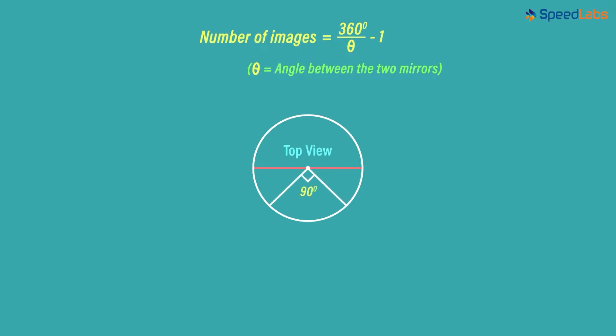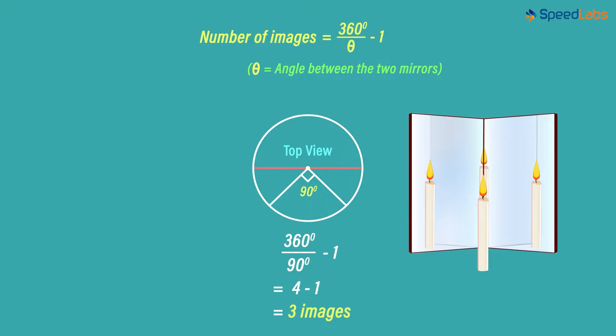So when the angle between the mirrors is 90 degrees, we substitute theta as 90 degrees. This gives us the answer as 3. Hence, there are three images that we see.